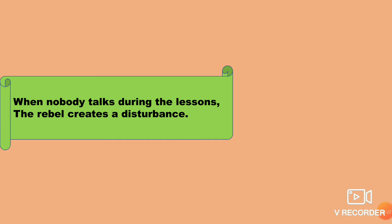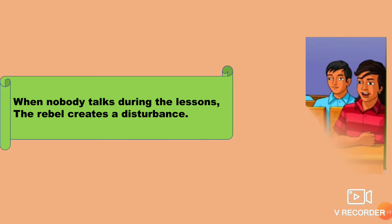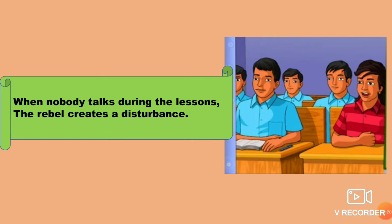When nobody talks during the lessons, the rebel creates a disturbance. So when everybody is silent and watching the lessons, the rebel immediately creates a disturbance — he raises a doubt or something like that to gain attention. He does this to show that he is something different from the others. I hope you understood the theme of the poem, children.